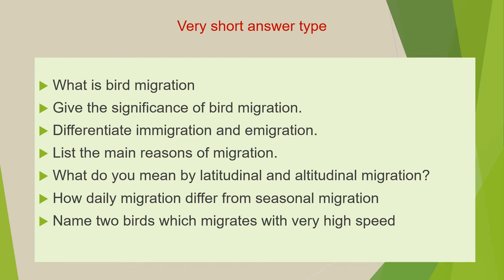So the first question of this category is: what is bird migration? Next is: give the significance of bird migration. Third is: differentiate immigration and emigration. Next is: list the main reasons of migration. Next is: what do you mean by latitudinal and altitudinal migration? Next is: how does daily migration differ from seasonal migration? Next is: name two birds which migrate with very high speed.